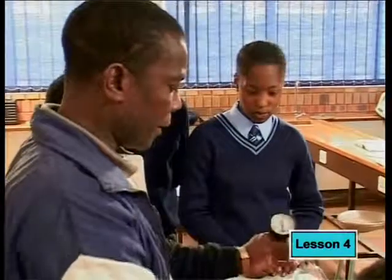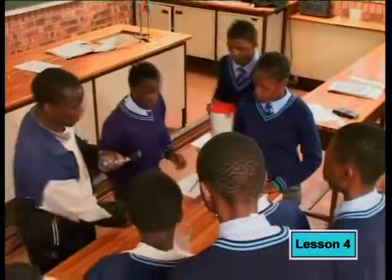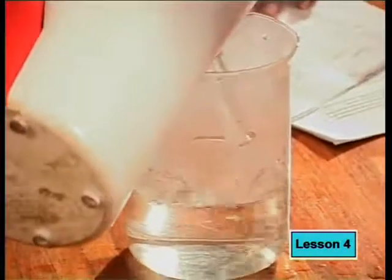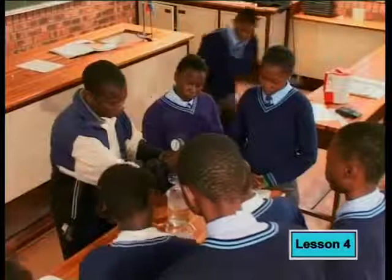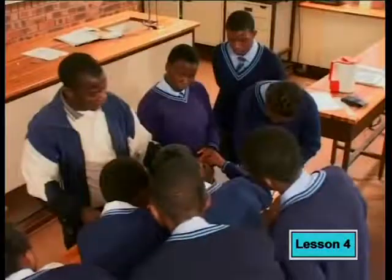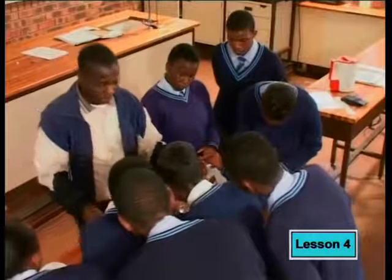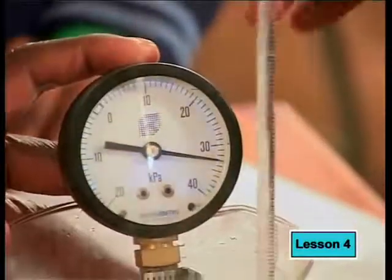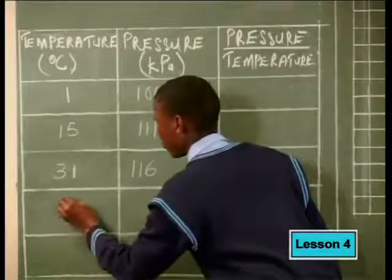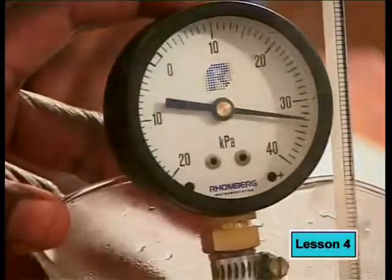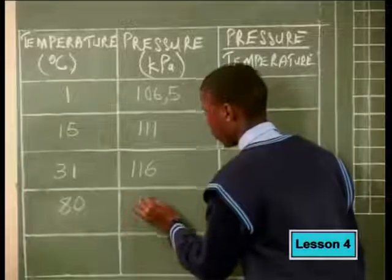We need to get another reading. Add the water in here — same procedure, thermometer as well as the Jolly Bulb. The temperature has stopped rising at 80 degrees Celsius, and the pressure reading is 133 kilopascals.